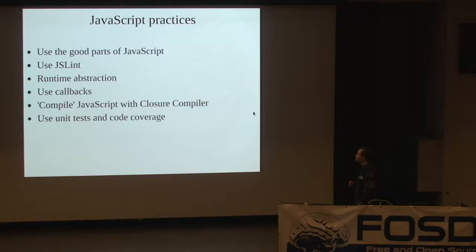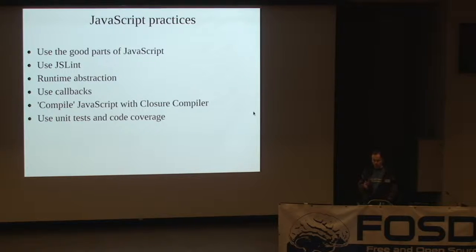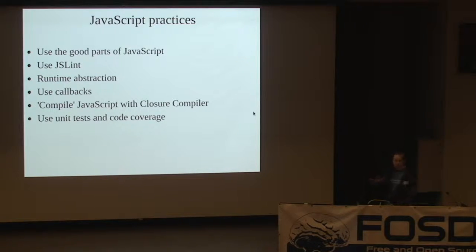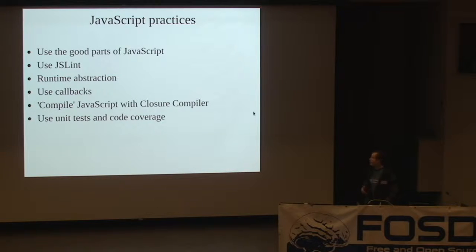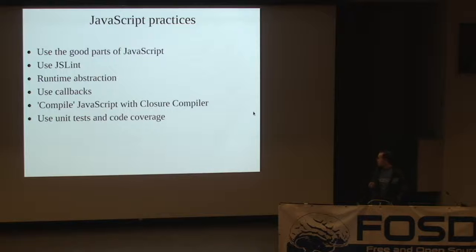Here's a list of practices I want to talk about. You have to use the good parts of JavaScript and avoid the bad parts. You want to use JSLint, which checks whether your JavaScript is good. You want to use runtime abstraction — we really need that because WebODF might be running in a browser, on a command line, or in a native application. You want to use callbacks for fast I/O, compile your JavaScript using the Closure Compiler, and of course use a lot of unit tests.